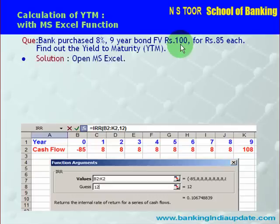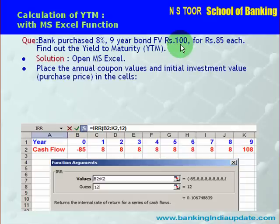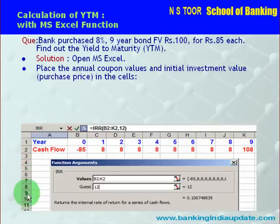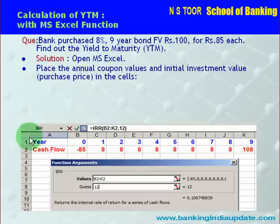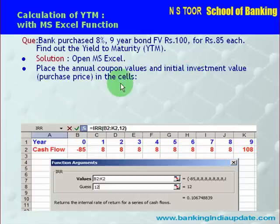Let us start. Let us open MS Excel. After opening MS Excel, we find this spreadsheet. On this side we have the row numbers, and on this side we have the column references — columns A, B, C, D and so on. After opening MS Excel, we shall place the annual coupon values and the initial investment value — that is the purchase price — in these cells.